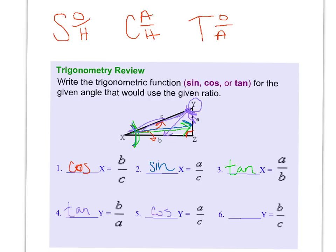And then B over C, again, we're still looking at angle Y. So B is opposite and C is hypotenuse, which leaves us with sine.